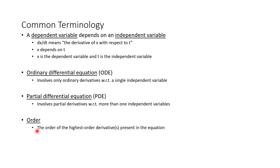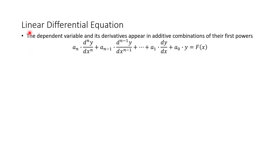Order is the highest order derivative present in the equation. So if you see a fifth derivative and that's the highest one, then the order of your differential equation would be five. A linear differential equation is one where the dependent variable and its derivatives appear in additive combinations of their first powers.